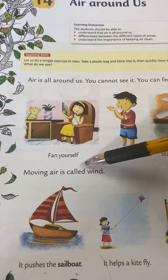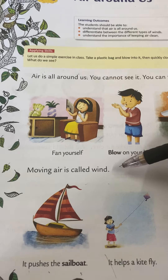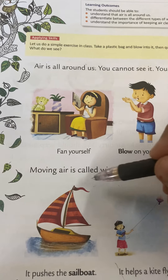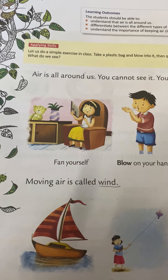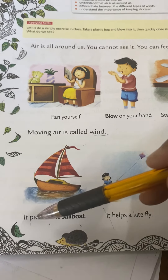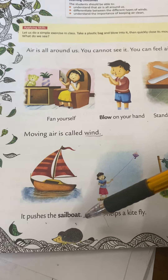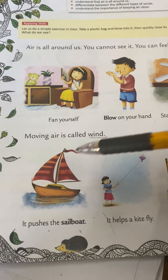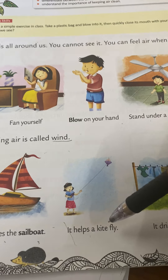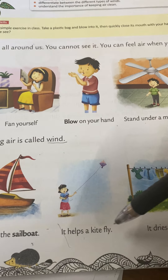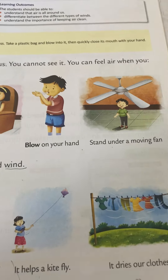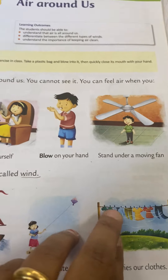Moving air is called wind. Underline the word wind. So what is moving air called? Wind. It pushes the sailboat — this is done by the air. It helps a kite fly. It dries our clothes, like I had mentioned to you in the last class.